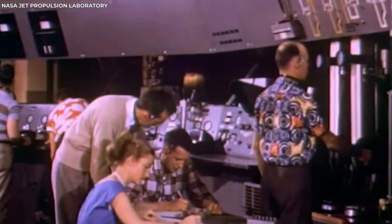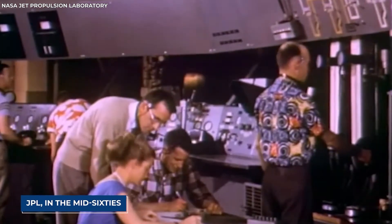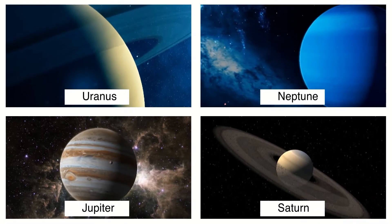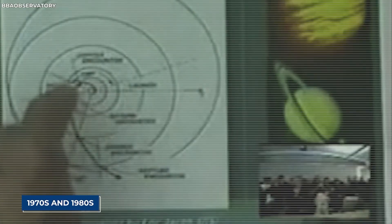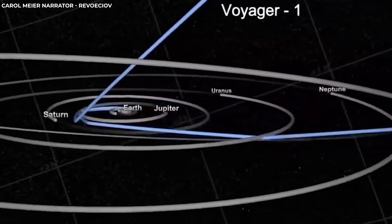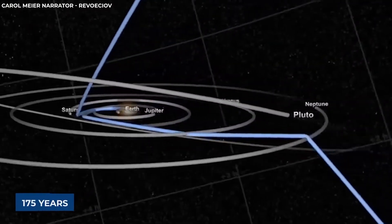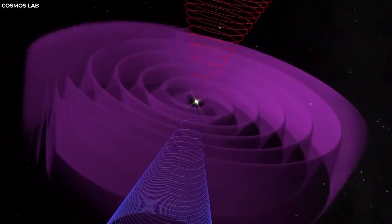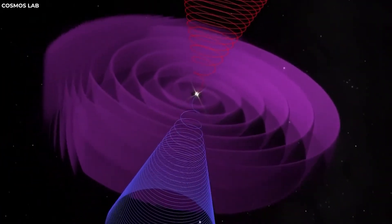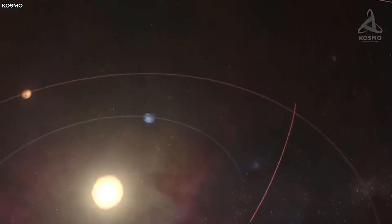While working at NASA's Jet Propulsion Laboratory in the mid-60s, Flandreau made a groundbreaking discovery. He identified a rare planetary alignment of the outer planets—Jupiter, Saturn, Uranus, and Neptune—that would occur in the late 1970s and early 1980s. This alignment, which happens approximately once every 175 years, presented a unique opportunity for a spacecraft to use gravitational assists to swing from one planet to the next, thereby saving time and fuel.